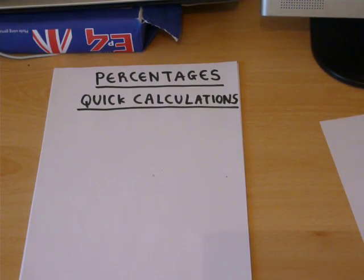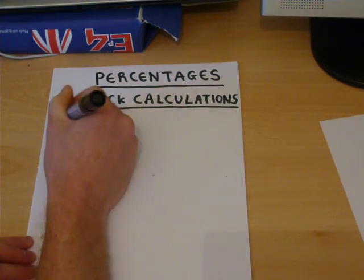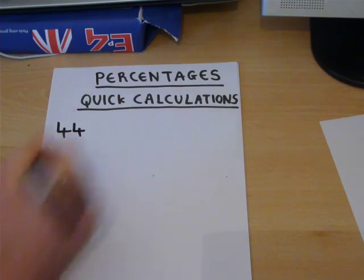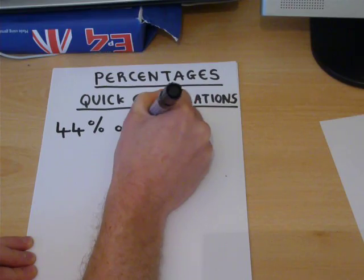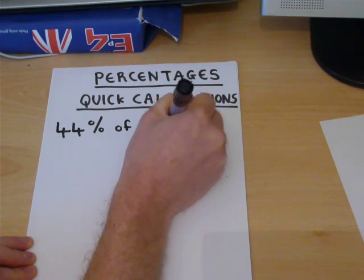I want to talk through some quick calculations you can do to find percentages using a calculator to speed up the process. Suppose we want to find 44% of 32 pounds.